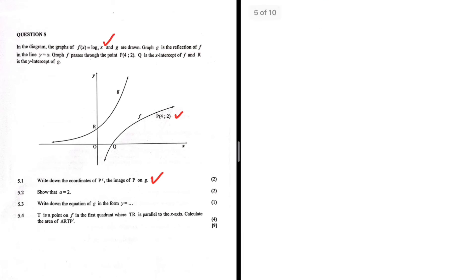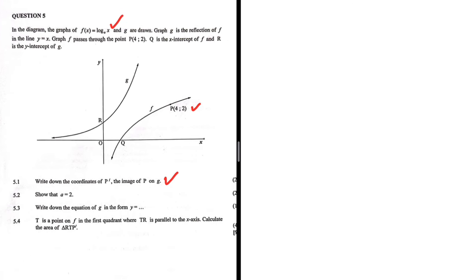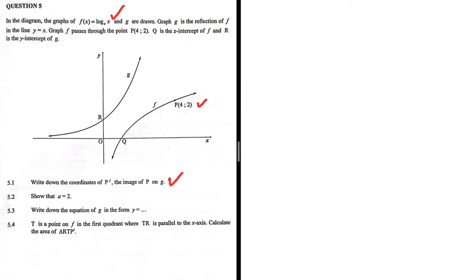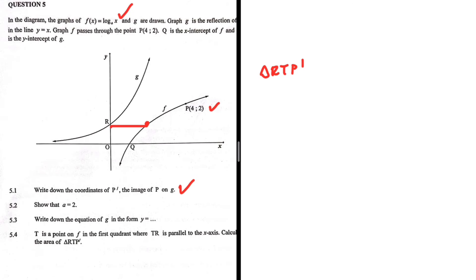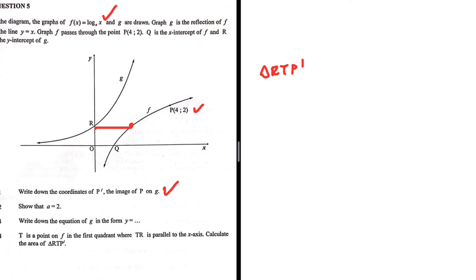Question 5.4 is quite interesting. T is a point on f in the first quadrant, where TR is parallel to the x-axis. T is located such that TR is parallel to the x-axis. We need to calculate the area of triangle RTP'. Since TR is parallel to the x-axis, R and T share the same y-value.